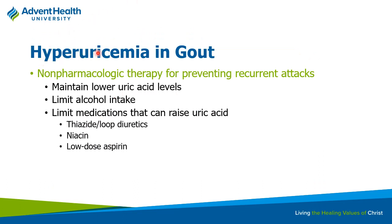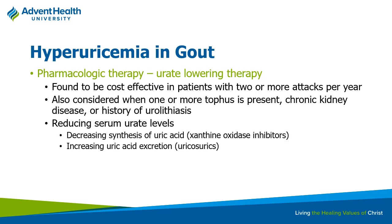To lower uric acid levels: limit alcohol intake, which tends to increase uric acid. Medications like niacin, low-dose aspirin, and thiazides can cause dehydration—concentrating uric acid—or decrease its excretion. Avoid diets rich in red meats since purines break down into uric acid. For patients with two or more attacks per year, urolithiasis history, or chronic kidney disease, urate-lowering therapy on board is beneficial.